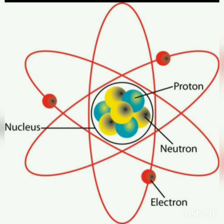Atoms have smaller particles in them which are known as subatomic particles. Atoms are made up of three subatomic particles: electrons, protons, and neutrons. Electron has negative charge, proton has positive charge, whereas neutron has no charge — it's a neutral one. Protons and neutrons are present in the center of the atom, which is called the nucleus. Electrons are outside the nucleus and revolve rapidly around it in a fixed circular path called energy levels or shells.